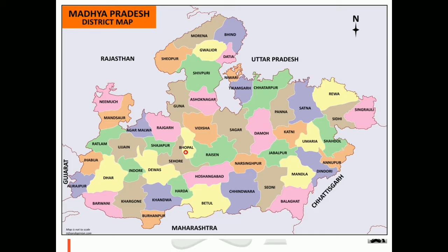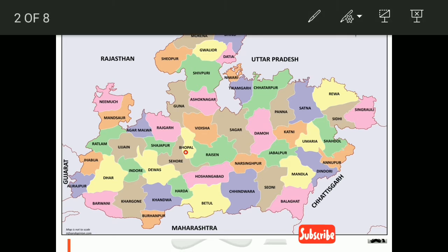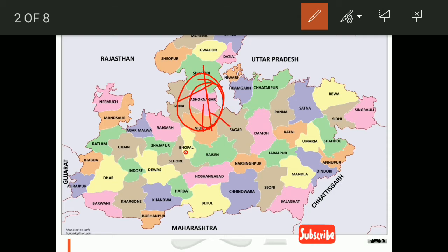Hello everyone, in this video we will talk about Ashoknagar district. Before this we have already completed Datiya, and here we will talk about all the minute details — there are so many places in Ashoknagar as well. Let's see the map of Madhya Pradesh to locate Ashoknagar. It is in the center, surrounded by Shivpuri, Guna, Vidisha, and Sagar.